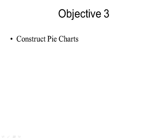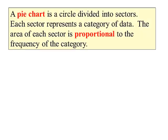Lesson objective number 3, construct pie charts. A pie chart is a circle divided into sectors and each sector represents a category of the data. The area of each sector is proportional to the frequency of the category. A pie chart lets us see one category in relation to the whole.